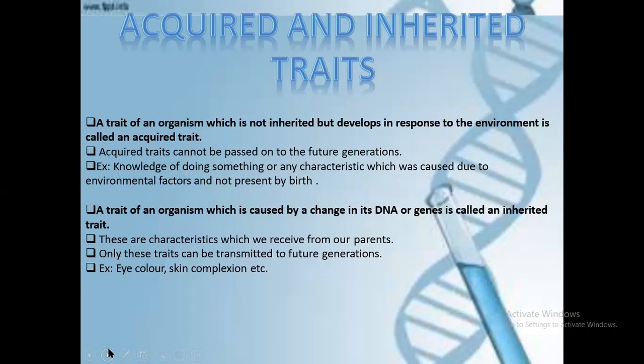Inherited traits are traits of an organism caused by a change in its DNA or gene — these are called inherited traits. These are the characteristics which we receive from our parents, and only these traits can be transmitted to future generations. For example, color of eye, color of skin, complexion, etc.